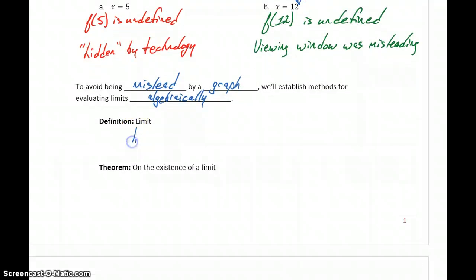So briefly here, we'll reestablish our definitions for limits. So the limit of some function f(x) as x approaches c is going to be equal to L